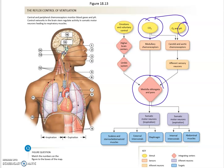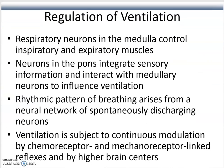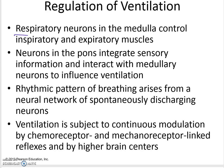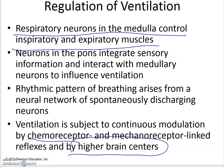The regulation of ventilation here is that the respiratory neurons in the medulla control inspiratory and expiratory muscles, and the neurons in the pons integrate sensory information and interact with medullary neurons to influence ventilation. The rhythmic pattern of breathing arises from a neural network of spontaneously discharging neurons. Ventilation is subject to continuous modulation by chemoreceptor and mechanoreceptor-linked reflexes and by higher brain centers. The chemoreceptors, the most important ones that you have, are the ones that monitor CO2 and pH levels.